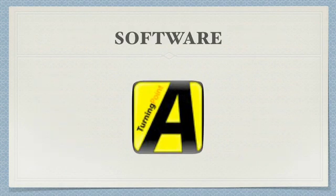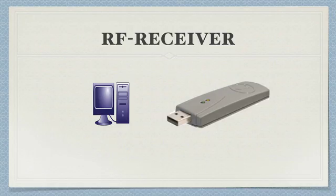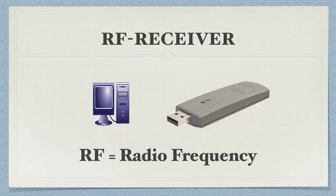The software is installed on the lecture theatre computer and allows the instructor to interpret an audience's responses. The RF receiver plugs into the lecture theatre computer. RF stands for radio frequency. Without the RF receiver, your computer would not be able to receive an audience's responses.